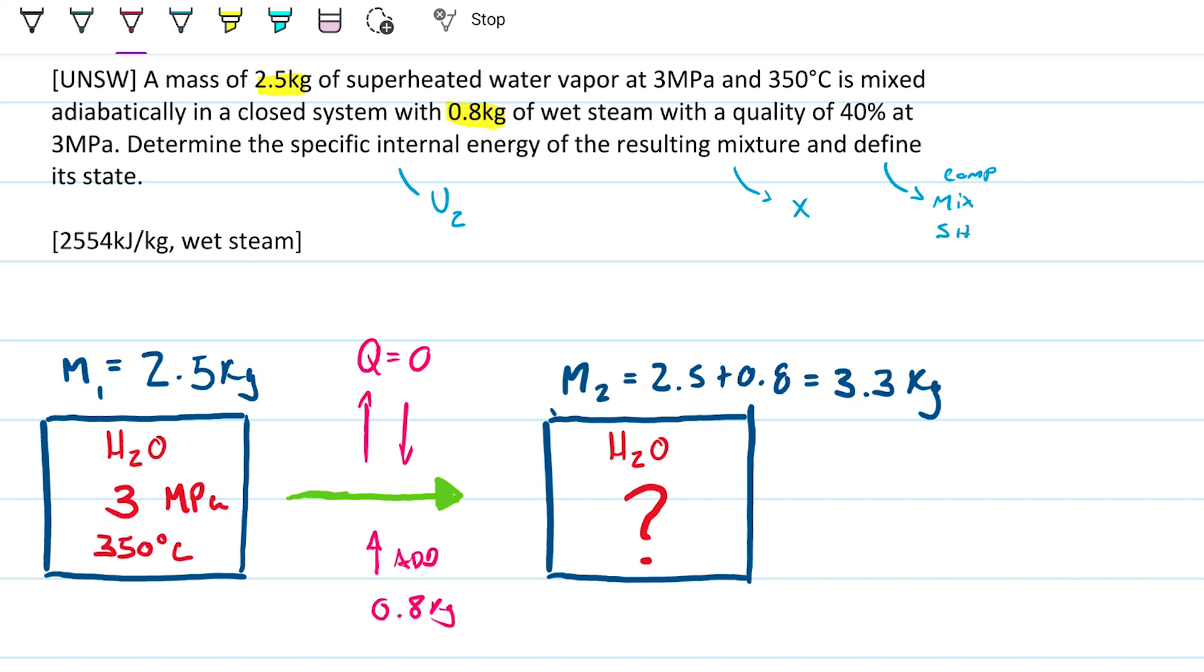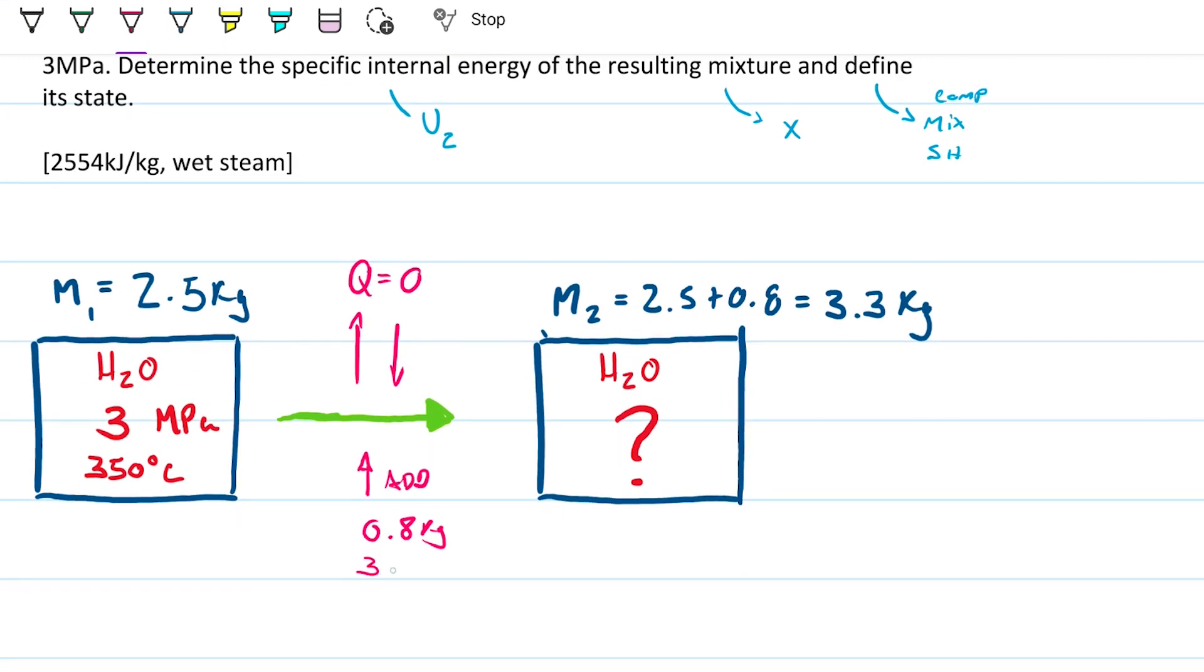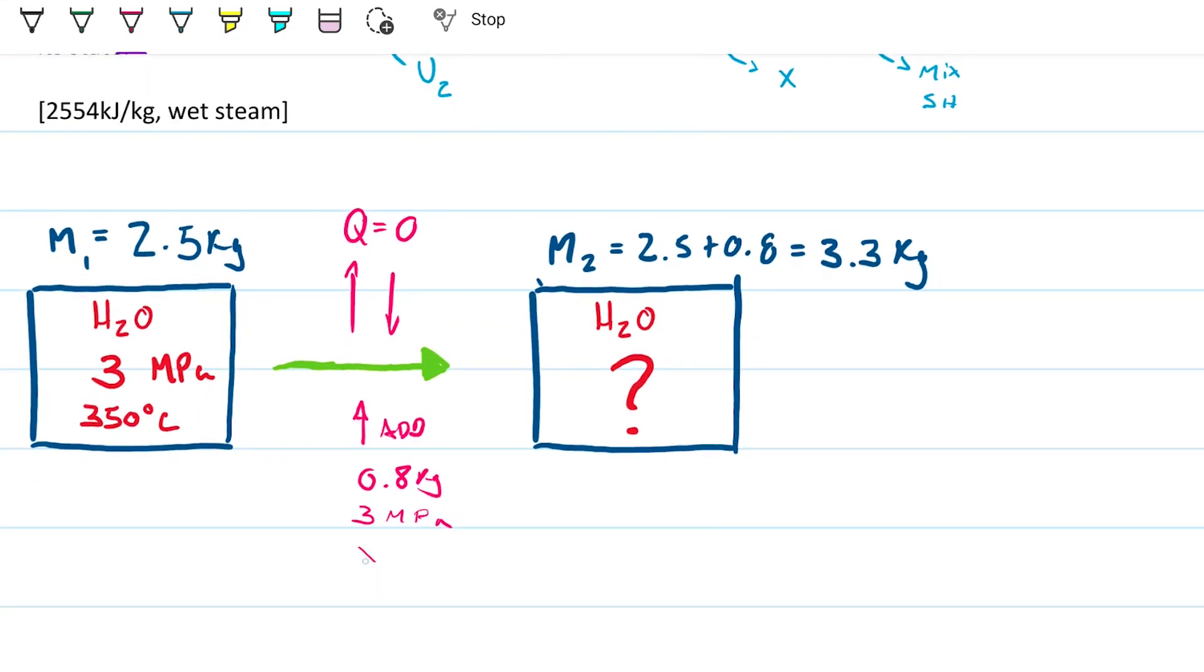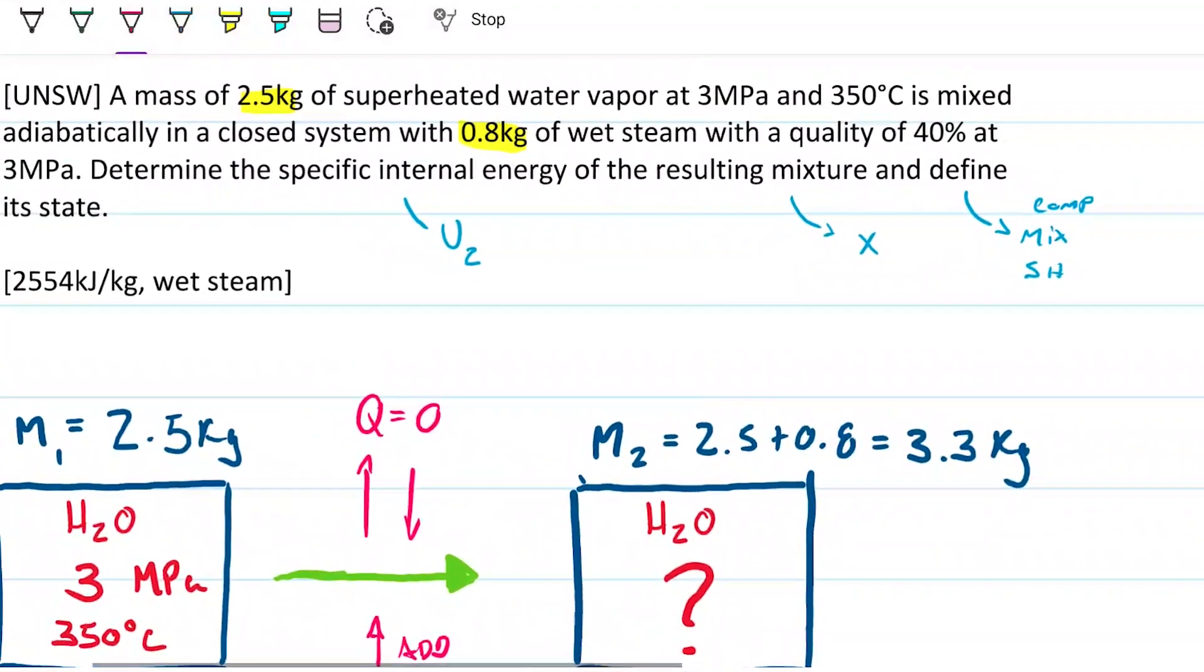Because when we talk about different masses entering, 3 megapascals and quality of 0.4 or 40%, when we talk about masses combining, there's a video that we talk about how when we use internal energy or entropy, we generally use entropy, right? This is a classical case in which entropy would be important, but there's two kind of twists to this.